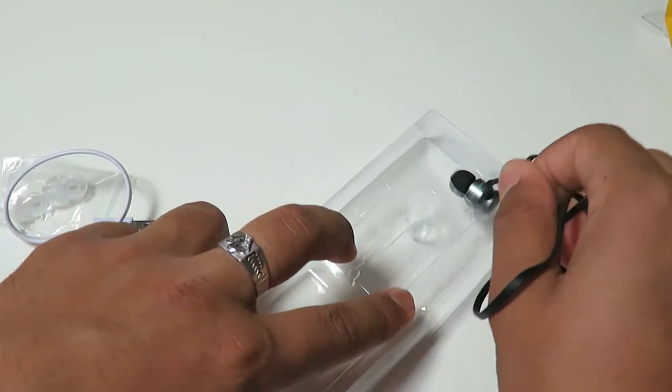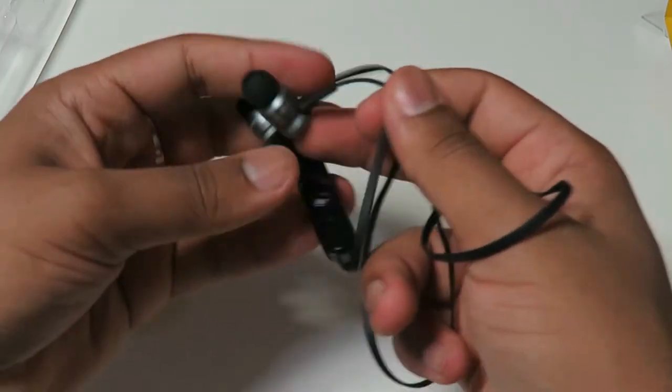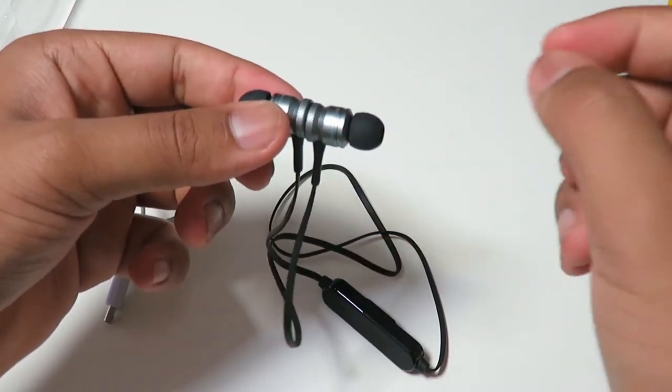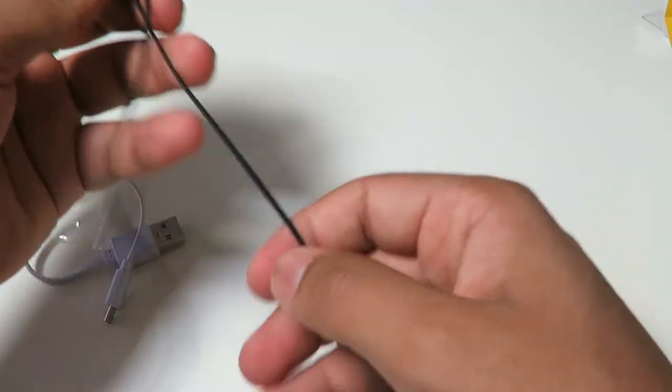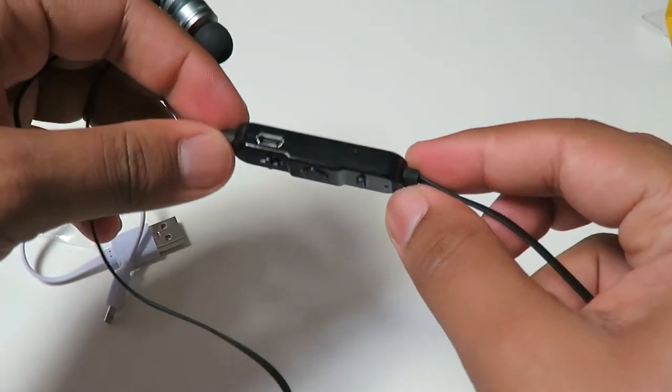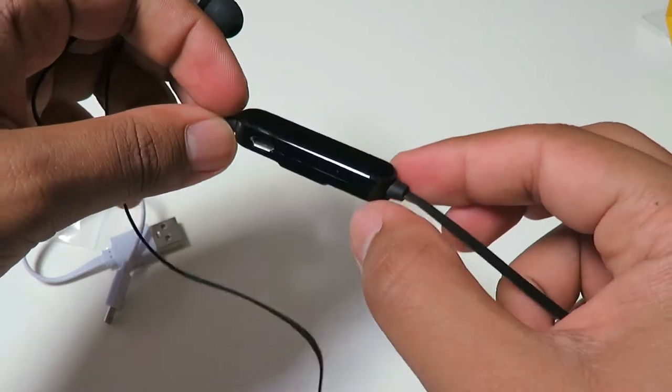Let's take it out of this packaging. Let's check it out. We have magnets here which is awesome, so it just locks in place like that. Then we've got the actual main button over here. This is quite a big bulk over here, so of course this is where the battery is stored as well.